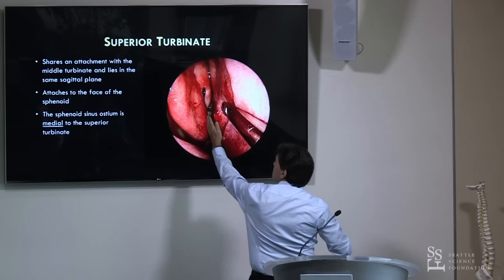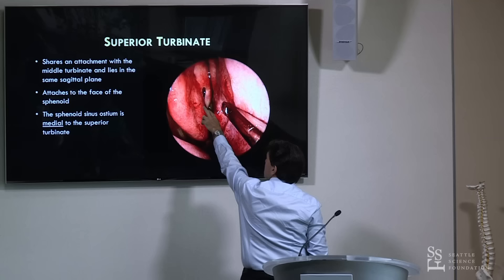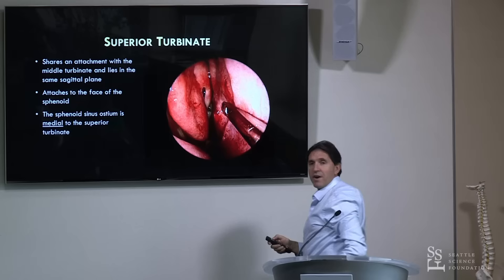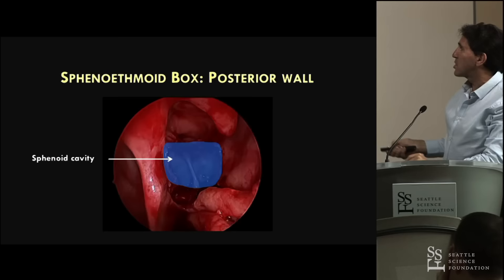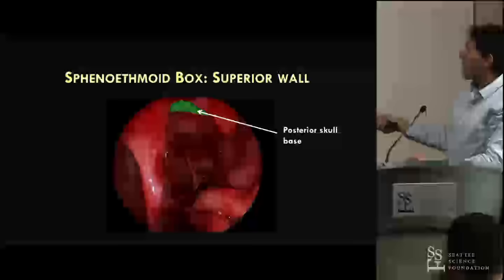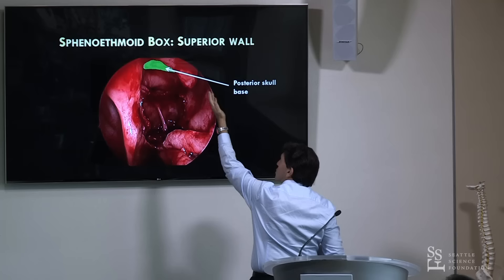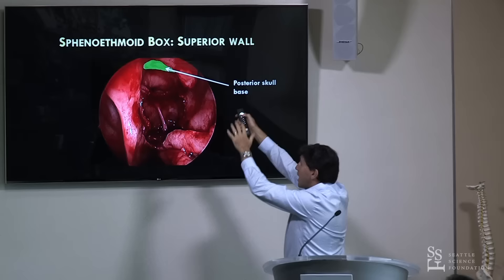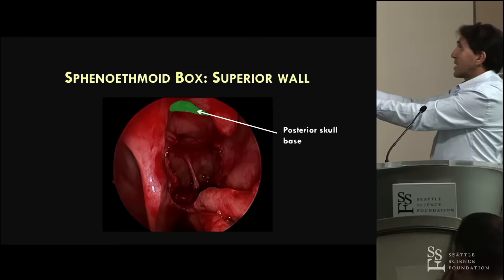The superior turbinate attaches to the face of the sphenoid. Once you get to that plane, you can cut back with a straight through-cutting forcep - you're always going to identify the sphenoid ostium. Very safe way of accessing the sphenoid ostium. We know the sphenoid cavity sits just there; we've got our posterior wall of our box and we can go straight through into the sphenoid, bite laterally, and with the medial orbital wall already defined we know how far laterally we can go. When you've got an onodi cell, take a straight through-cutting and bite that down - now you've got a wide open box with your planum sphenoidale visible.